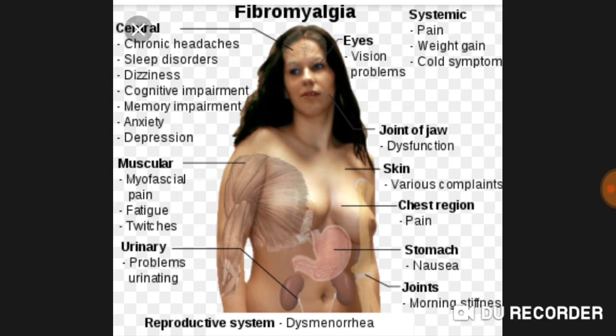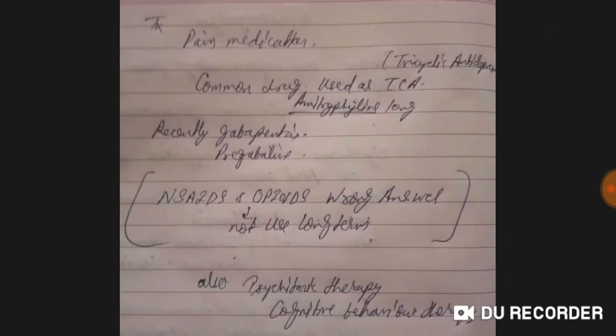Regarding trigger points — I did not include the diagram this time, but you can apply pressure to those specific points to assess them. The systemic symptoms of fibromyalgia include pain, weight gain, cold symptoms, vision problems, chest pain, nausea, morning stiffness, chronic headache, sleep disorder, dizziness, cognitive and memory impairment, anxiety, depression, myofascial pain, fatigue, twitching, and urinary and reproductive problems including dysmenorrhea.